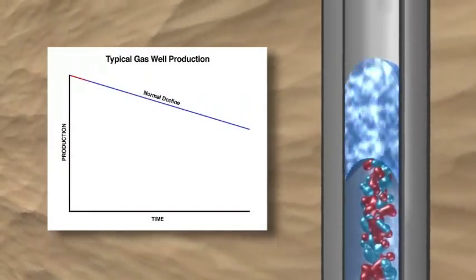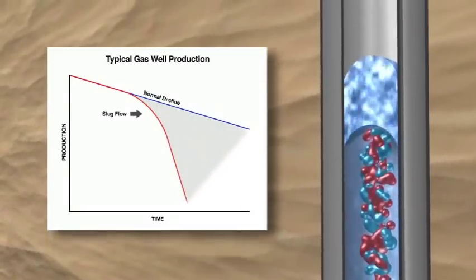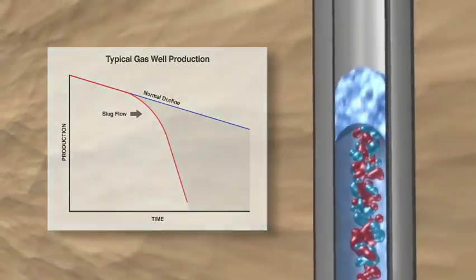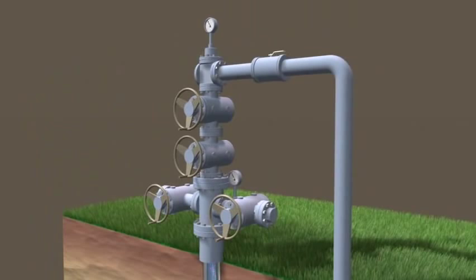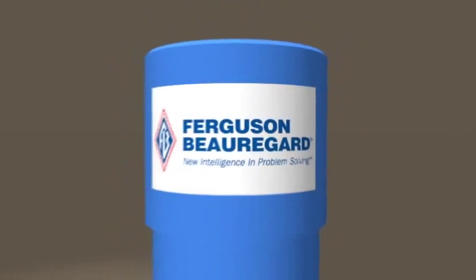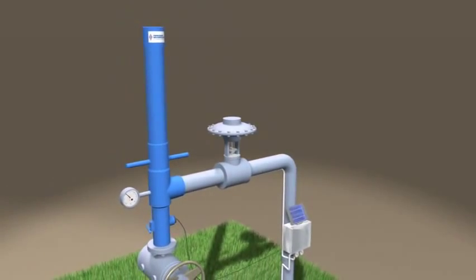This chart depicts a typical well's production decline. As soon as slug flow returns, production falls dramatically. You can't count on intermitting alone to take a well to economic depletion, but you can count on Ferguson Beauregard to come up with the breakthrough technology that makes the difference.